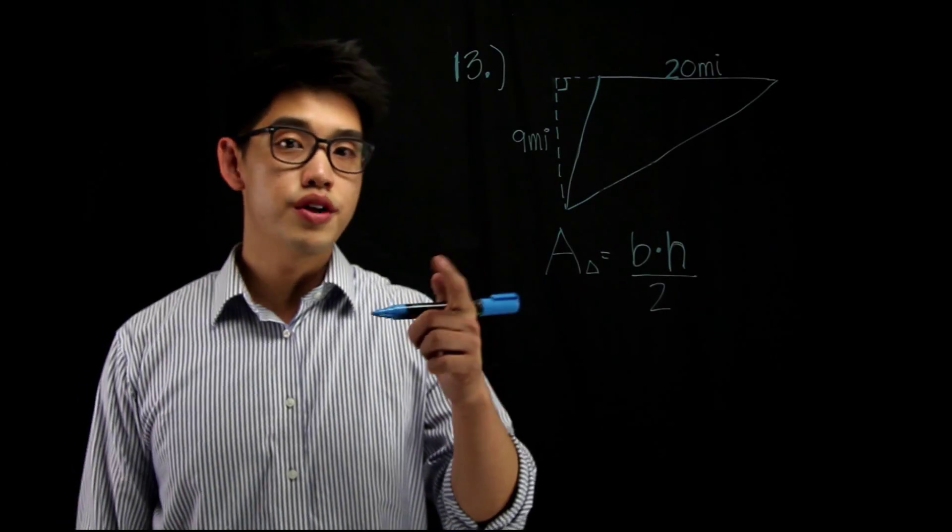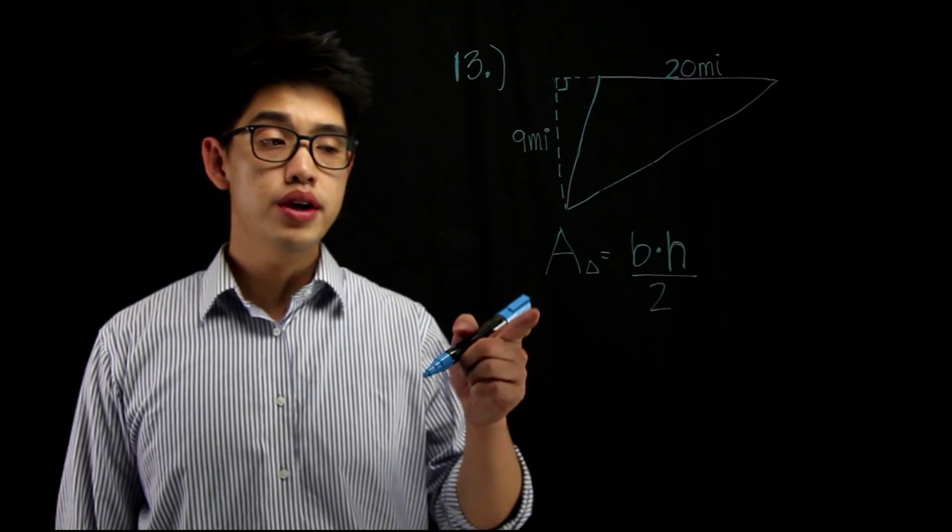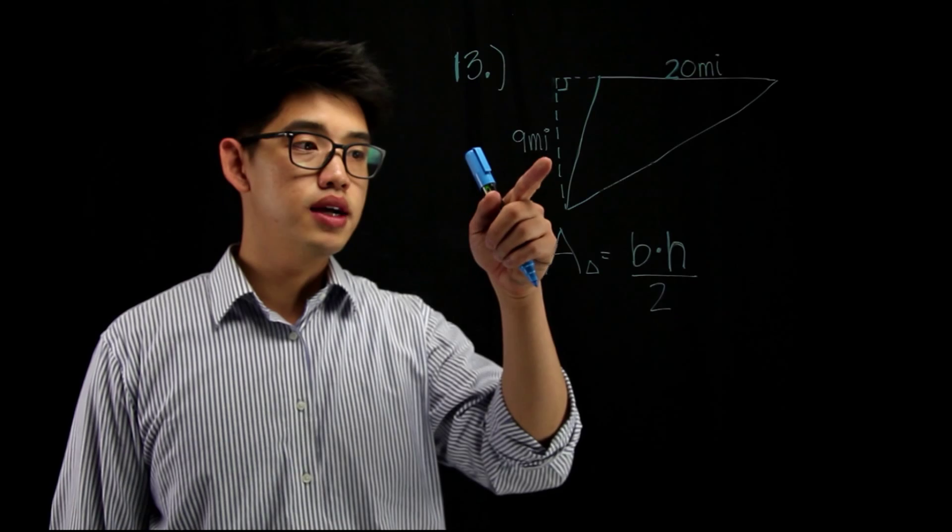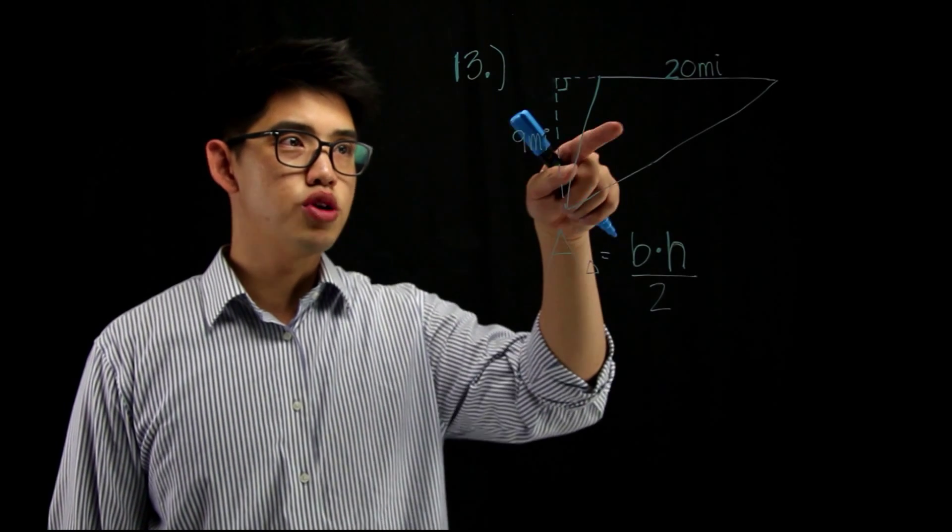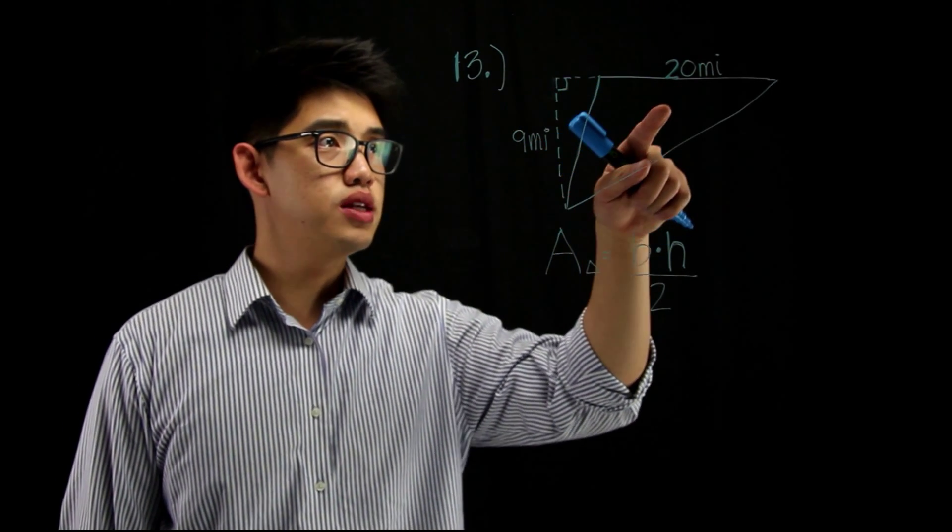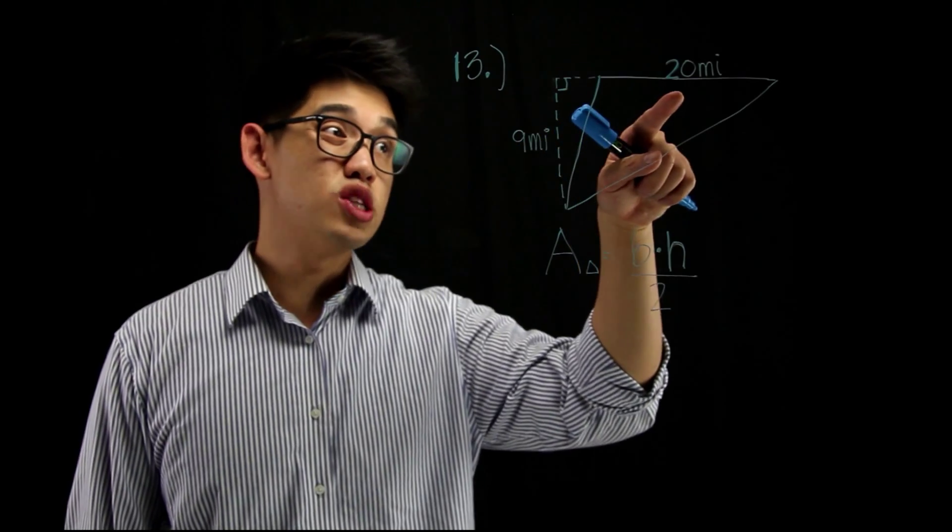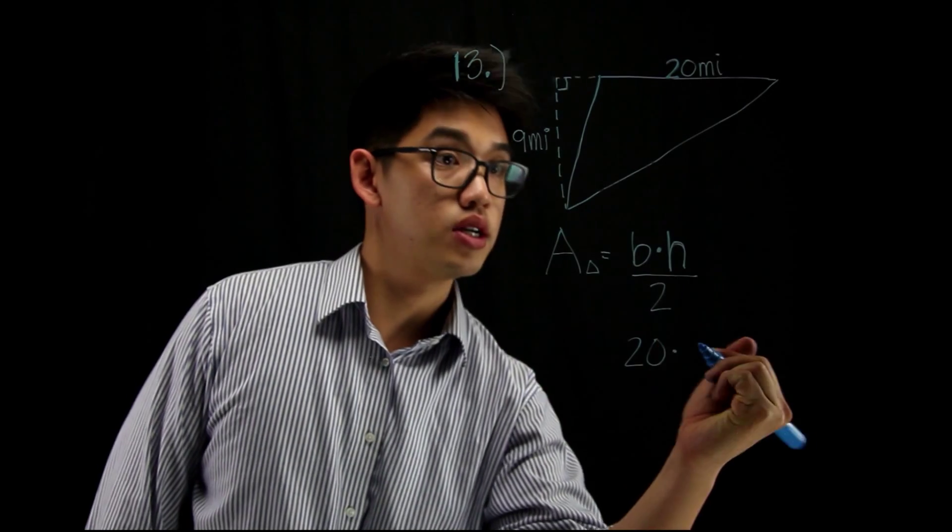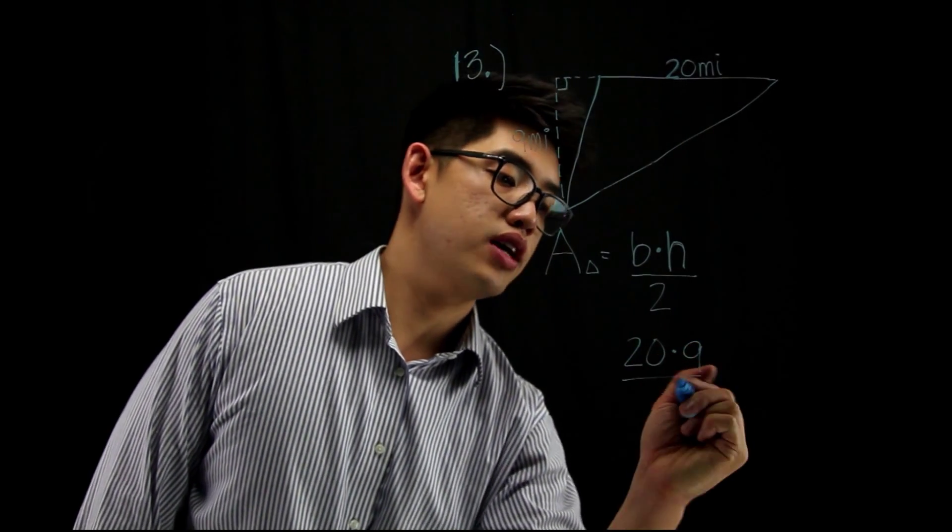For number 13, we're going to find the area of this triangle again. Remember, area is base times height divided by 2. We know that the base and height are what they are because they're perpendicular with one another. We see that the base right here is actually 20. So, we can say 20 times the height, which is 9. Okay. They're perpendicular with one another. And we're going to divide that by 2.